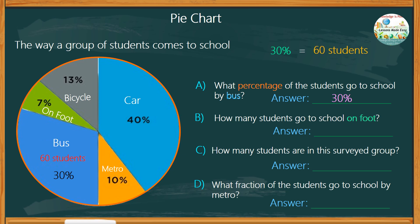So look at the relationship between the percentage and the number of students. From 30 to 60, the number in percentage is just multiplied by 2. It means if 7% of them go on foot, that would be 14 students.